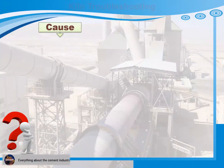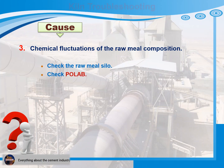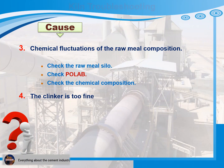Cause 3: Chemical fluctuations of the raw meal composition. Recommendations for action: 1) Check the raw meal silo. 2) Check pulloff. 3) Check the chemical composition. Cause 4: The clinker is too fine. Recommendations for action: Change chemical composition.